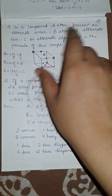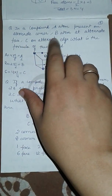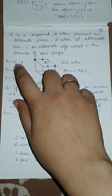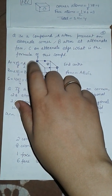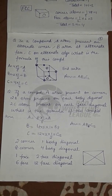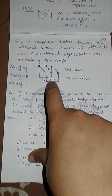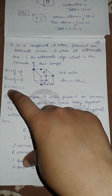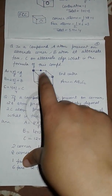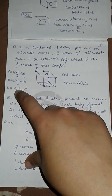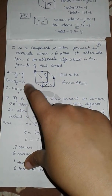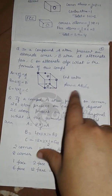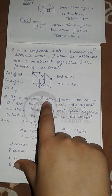In a compound where atom A is on alternate corners, atom B is on alternate faces, and atom C is on alternate edges: alternate corners means four corners contributing one-eighth each, giving A/2. Alternate faces means only two faces, contributing one-half each, giving B. Alternate edges give four atoms each contributing one-fourth, giving C. Multiplying through by two, the formula is AB2C2.